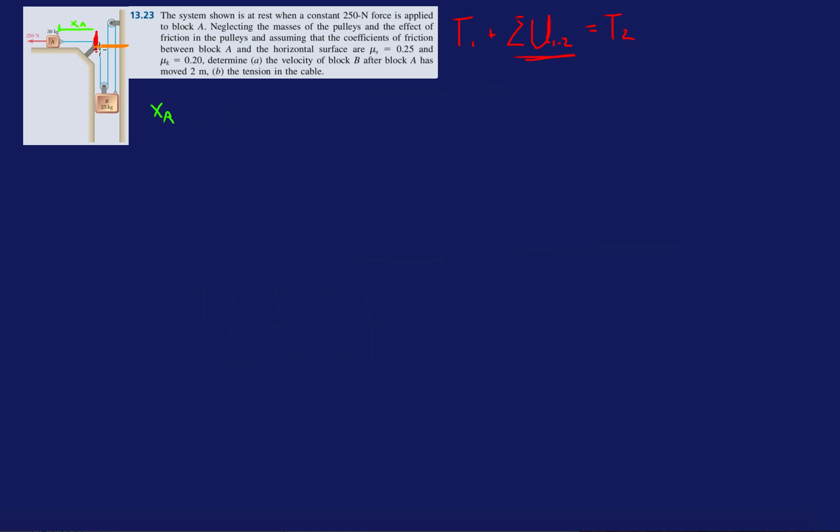We're gonna call this y_B. We're gonna have three of those: y_B here, y_B here, and then y_B here. So it's gonna be x_A + 3y_B equals some constant. So x_A might get longer, you know as x_A gets longer y_B's get a little shorter.